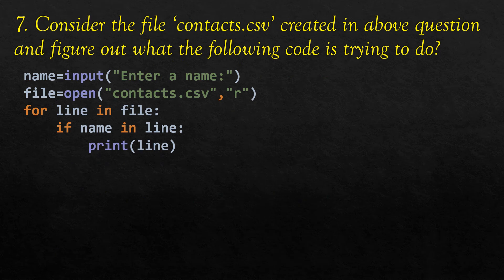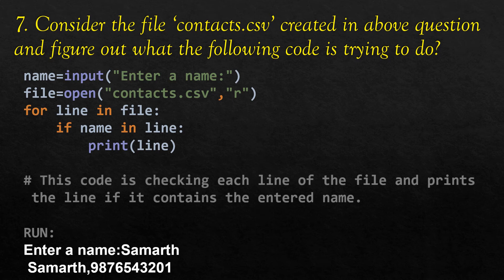The next question asks us to figure out what the following code does with the file contacts.csv. A variable name stores the user's input, and the file contacts.csv is opened in read mode. The code iterates through the file line by line: if the name is found in a line, it prints that line. So this code checks whether the entered name is present in the file and prints the entire line containing that name.